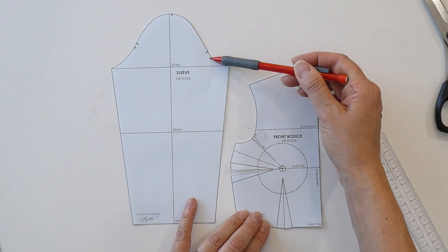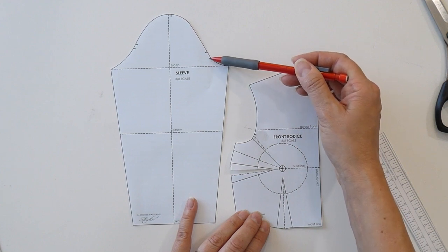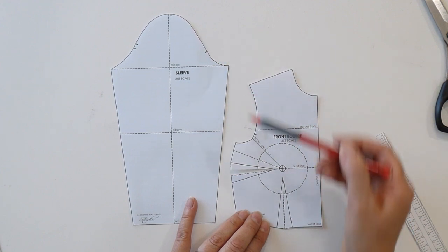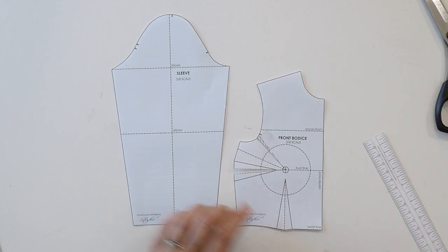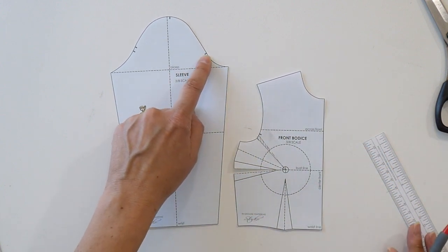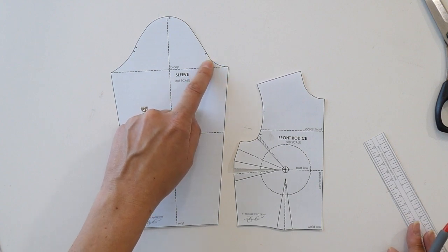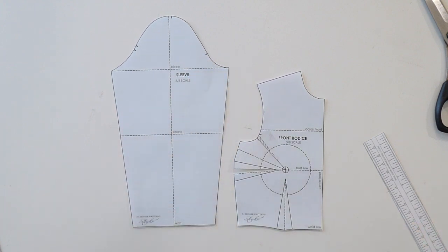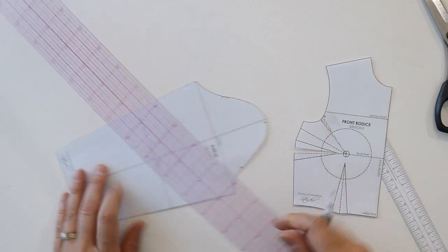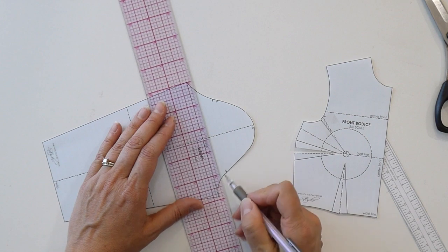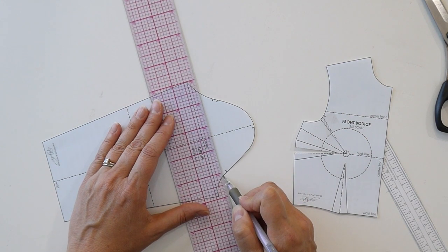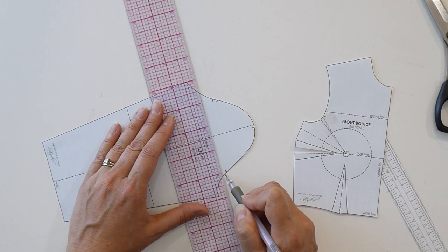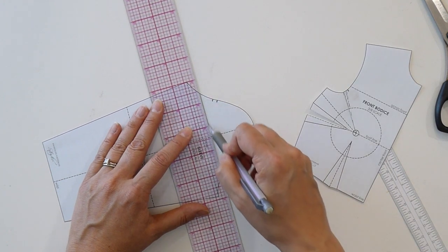So any correction that I make with my sleeve has to also happen below the notch. Otherwise, you're going to have misaligned notch positions. So now that I know that I'm going to reduce this front armhole length by half inch, I'm going to draw a slash line here on the sleeve as well. And again, I know that it's got to come from below the notch. So I'm going to draw a slash line below the notch, parallel with the bicep line.